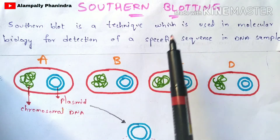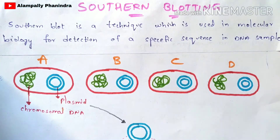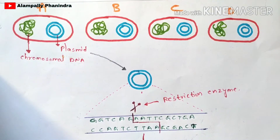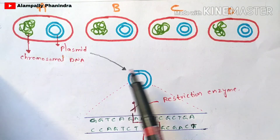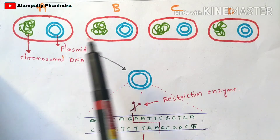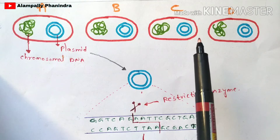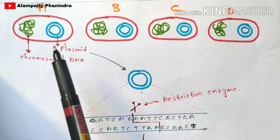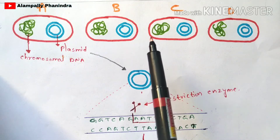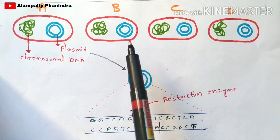So how can we find the specific sequence using this Southern blotting technique? Let us see the procedure. Firstly, you are going to extract the DNA sample. Here I am going to take four bacteria. All of these bacteria belong to the same species, but their genomic — the genetic information present in them — is totally different. For example, take the species of human beings, called Homo sapiens.